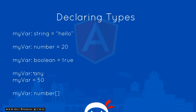We also have the any type, which basically means this variable — we don't know what it's going to be yet; it could be any type. So in the future we could set it equal to a number if we wanted to. And if we want to set it to an array, we just say colon, then the type in that array — for example, number — then the empty brackets like that. Or it could be string with empty square brackets.